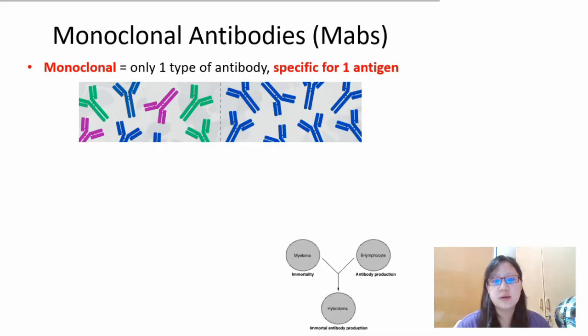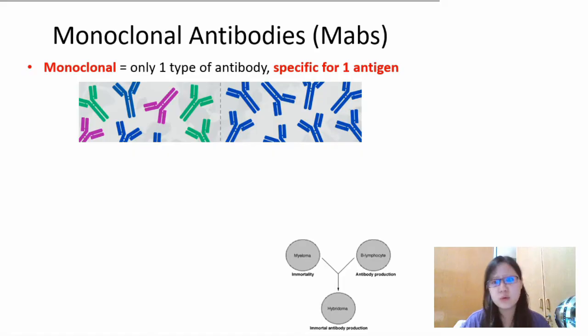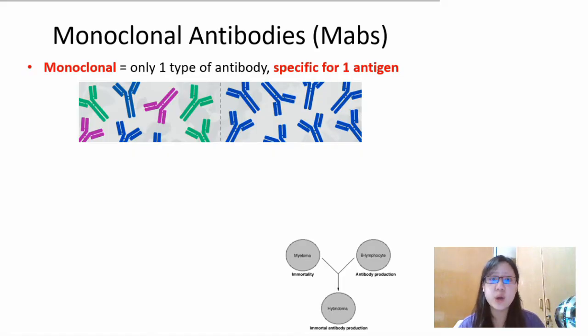Now, you might be a little bit confused here, because all this time we've seen the diagrams, and it seems like only one type of antibody is produced per pathogen.